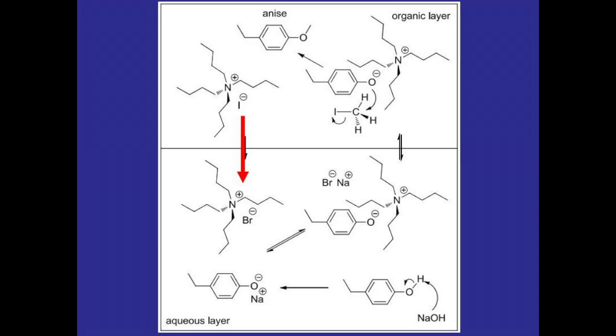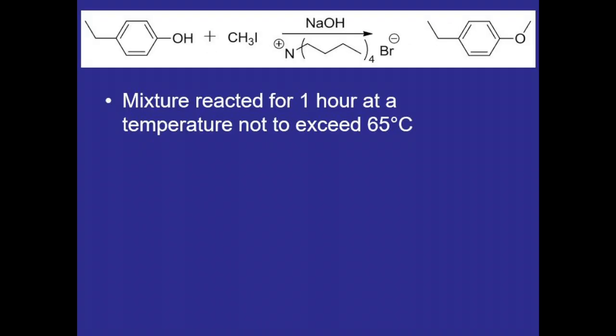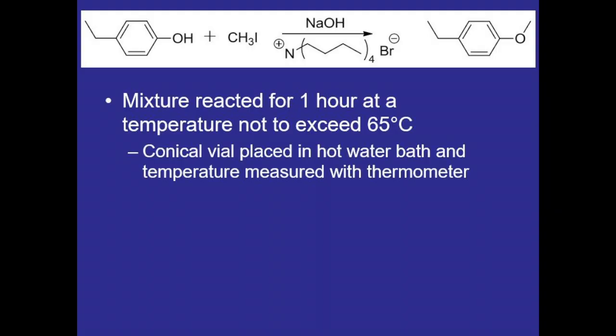To allow this process to fully happen, we'll allow the mixture to react for an hour at a temperature not to exceed 65 degrees Celsius as the methyl iodide refluxes. In order to monitor this, we'll place the conical vial in a hot water bath and measure the temperature of the water using a thermometer.